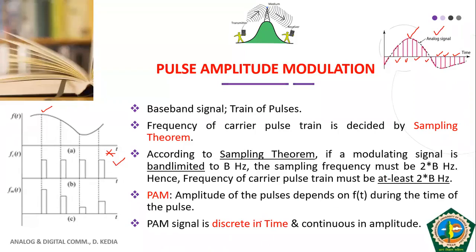There are two different versions of PAM signal. In the first version, the top of the pulses takes the exact shape of the modulating signal. In the second version — shown at the bottom of the slide — the top of the pulse is constant (flat), though the height varies. These are two different forms of PAM, which will be discussed in the next slide.